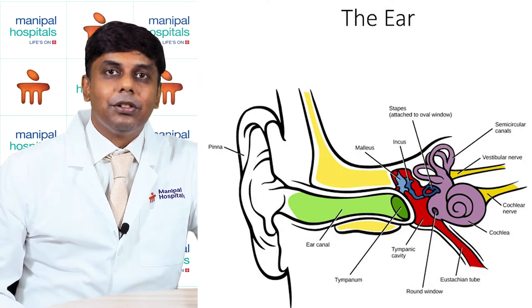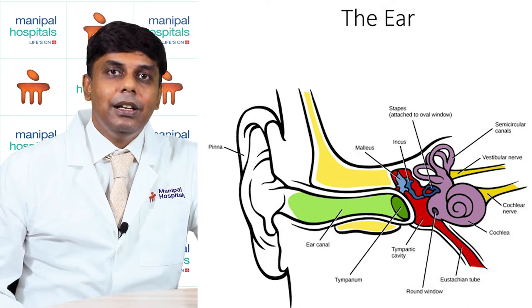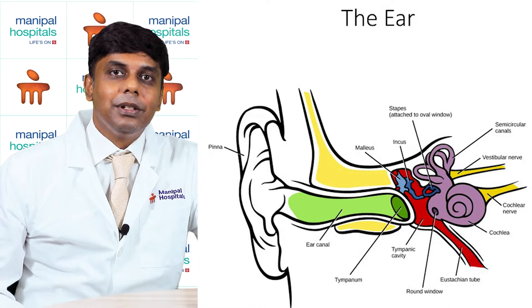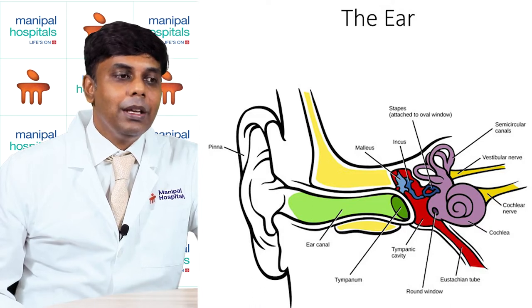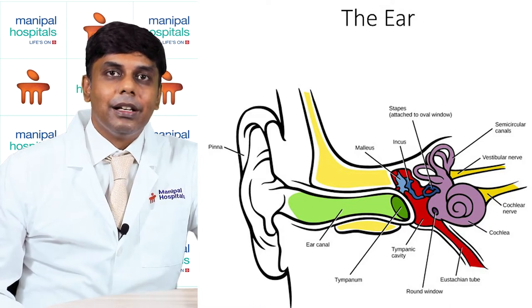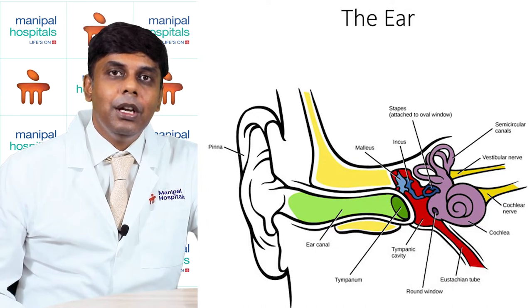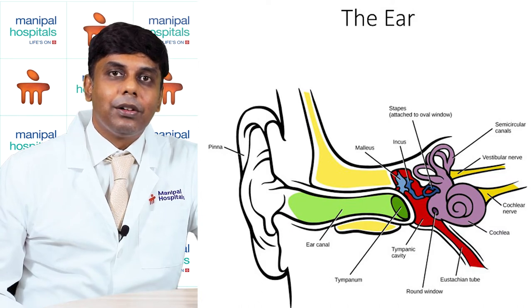When we hear, the sound passes through the external auditory canal, strikes the eardrum, causes it to vibrate, and transmits the vibrations through the middle ear. The middle ear is connected behind and in front by means of tubes to the bone behind the ear, which is a spongy matrix, and to the back of the nose by the Eustachian tube.